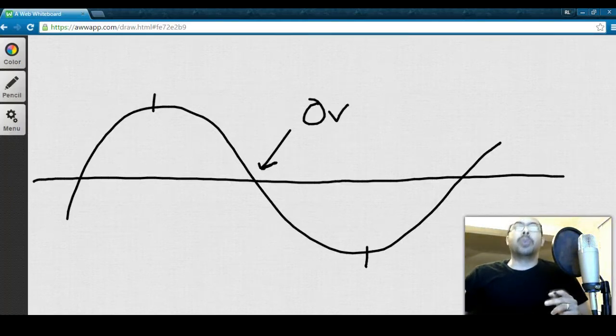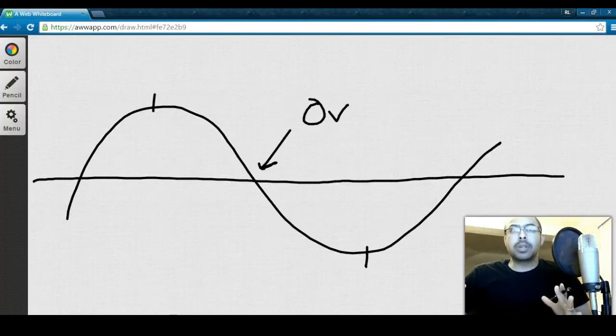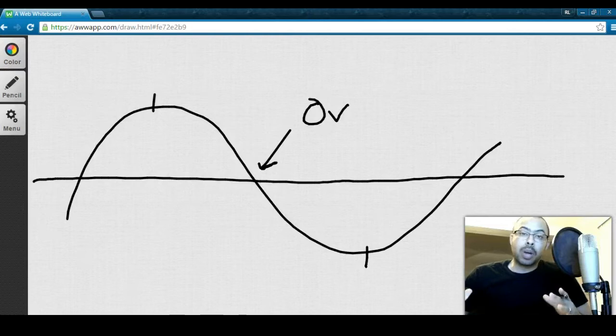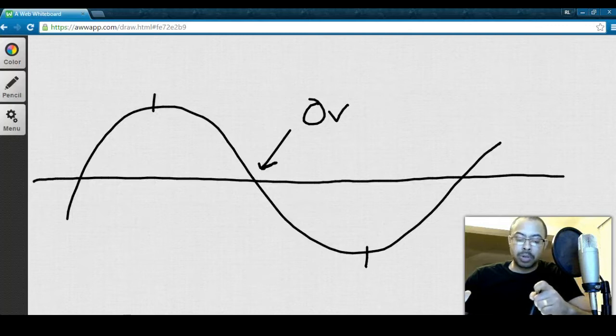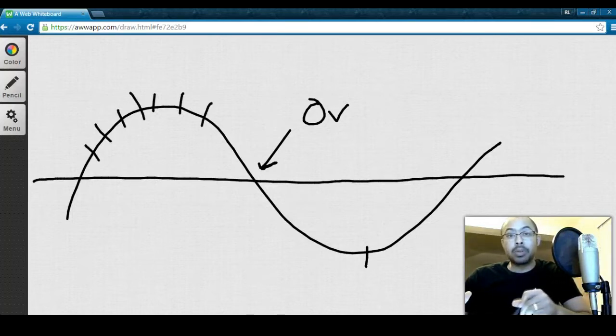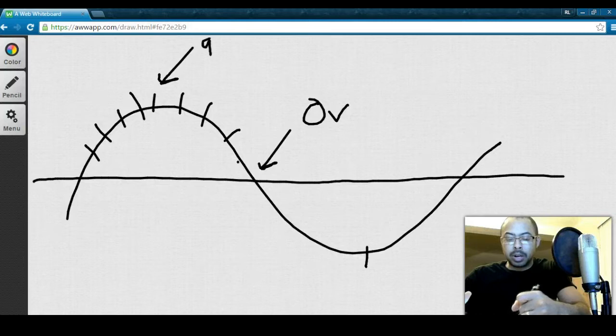Alright, so what V instantaneous is, is the ability to determine at what amplitude the voltage is going to be at any given angle. And an angle is actually just representing a particular point in time somewhere along this waveform. With the very maximum being at 90 degrees.